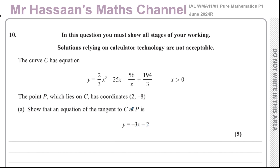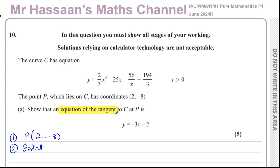We have to find the equation of the tangent to the curve at point P. To find the equation of the tangent, you have to understand that the tangent is a straight line. So finding the equation of a tangent is basically finding the equation of a straight line. To do that, we need two bits of information: firstly, any point on the line — we have point P which is (2, negative 8) — and secondly, the gradient of the tangent at P.